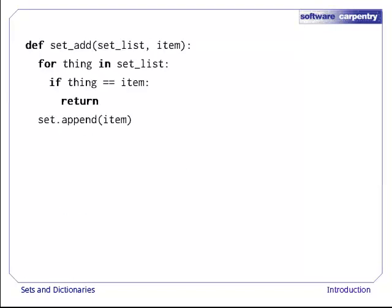Adding a value to a set would work the same way. We'd loop over the values already in the list and return right away if the new value was already there, or append it to the end of the list if we didn't find it.